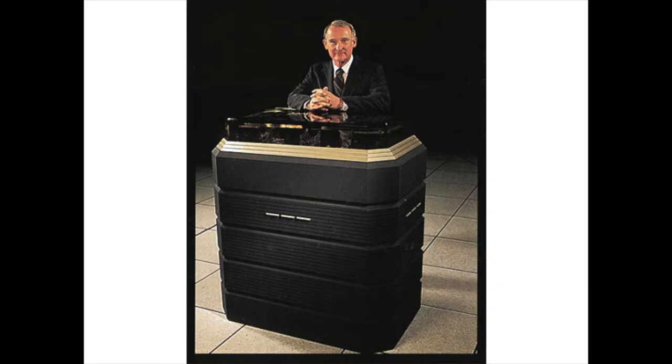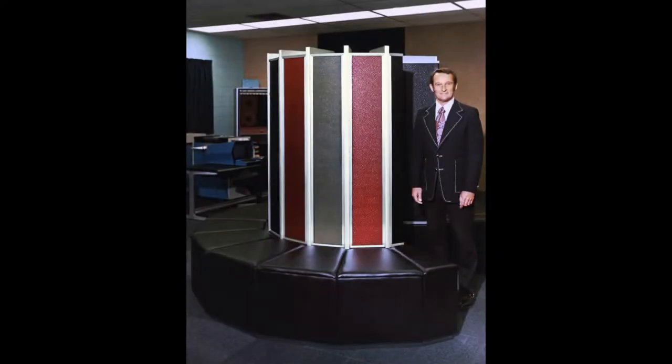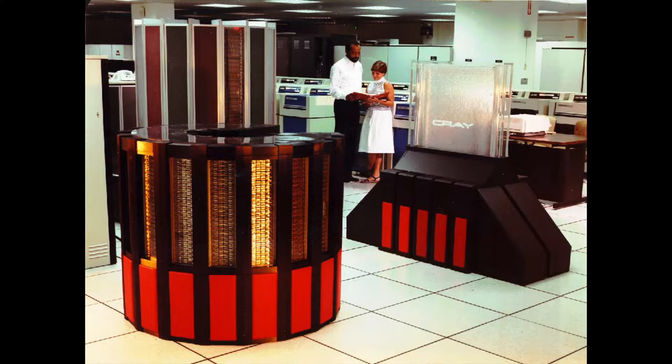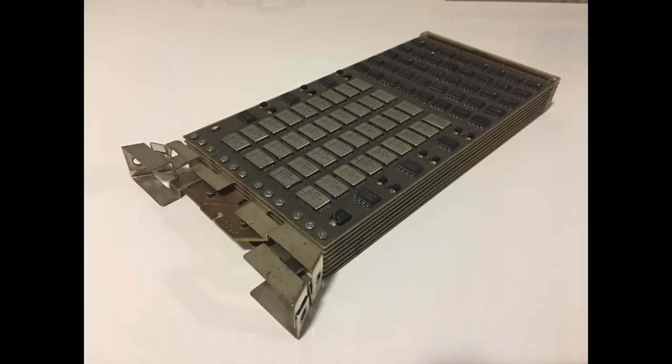Seymour Cray began the design of the Cray-3 in 1985 as soon as the Cray-2 reached production. Cray generally set himself the goal of producing new machines with 10 times the performance of previous models. Although the machines did not always meet this goal, it was a useful technique in defining the project and clarifying what sort of process improvements would be needed to meet it.